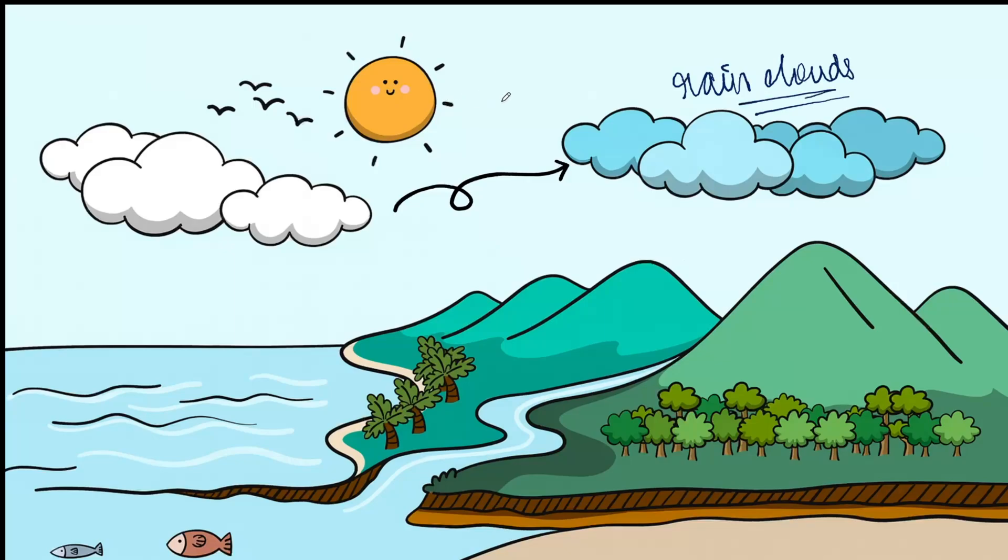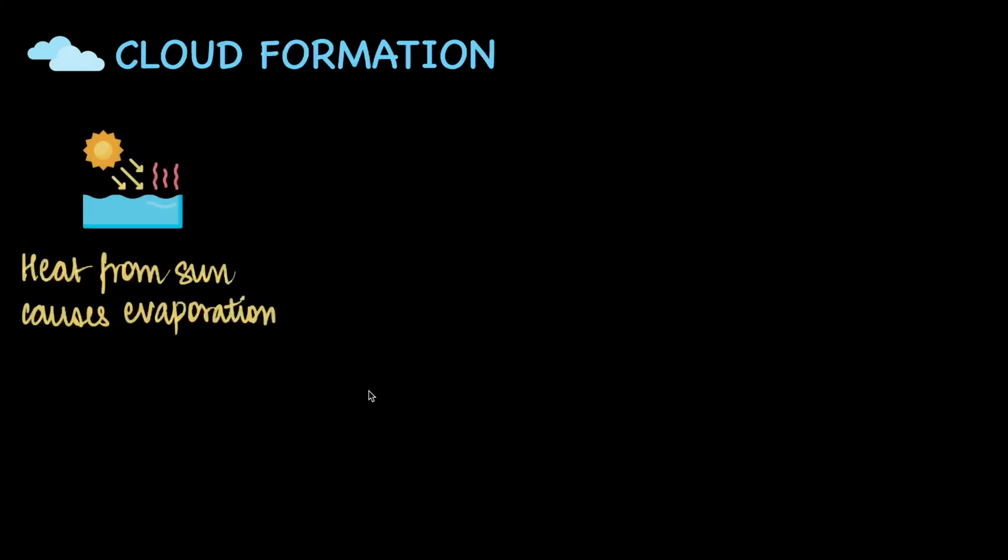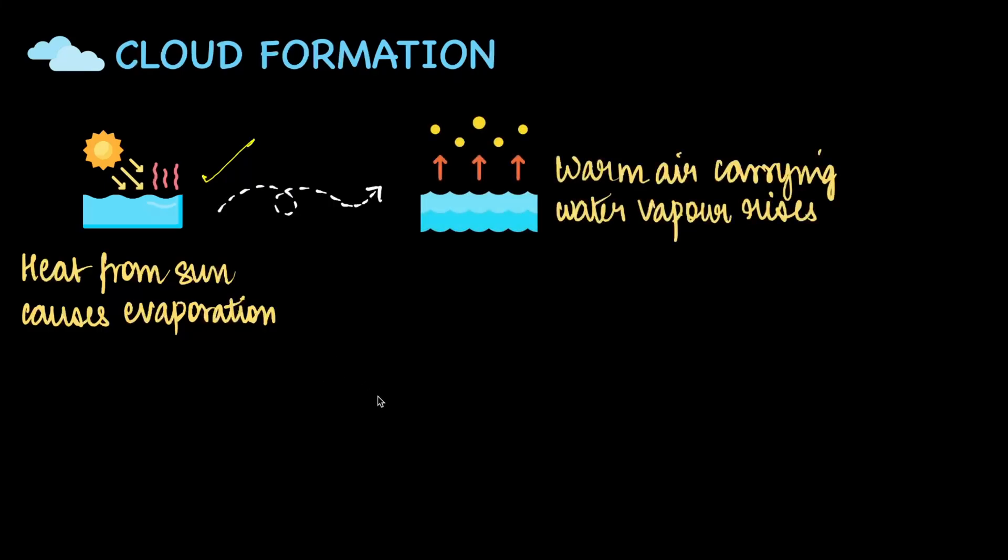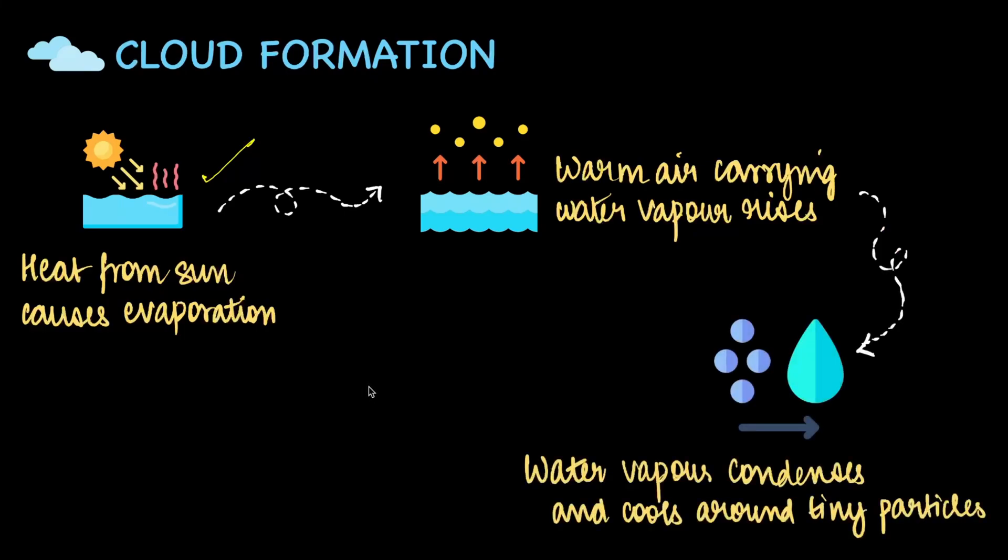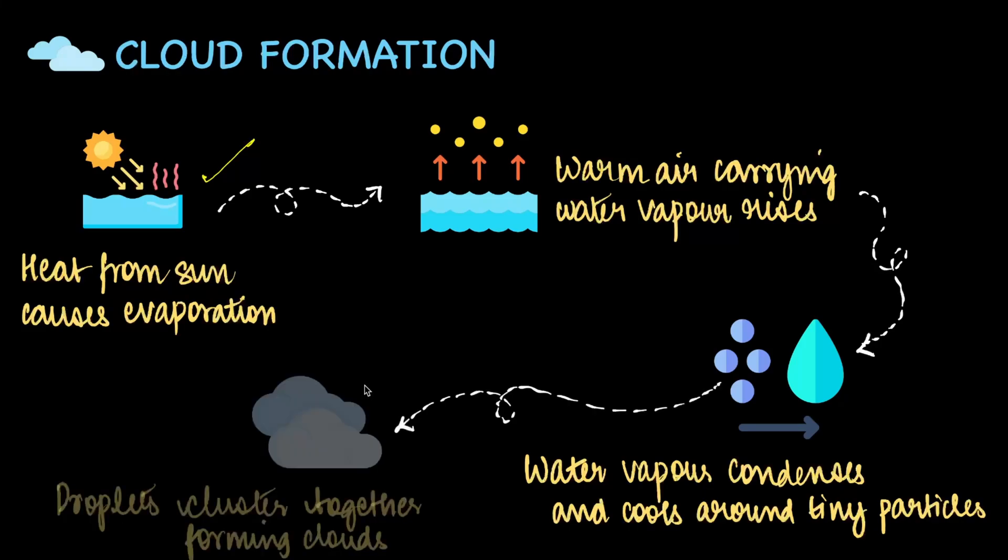So therefore, if we were to quickly summarise what we just learnt, we know that heat from the sun causes water from the oceans, lakes, and rivers all to turn into water vapour. And this water vapour rises higher into the atmosphere where the temperature becomes cooler. And water vapour cools down by the process of condensation around tiny particles like dust or pollen, forming tiny water droplets. And eventually, these droplets cluster together, forming clouds.